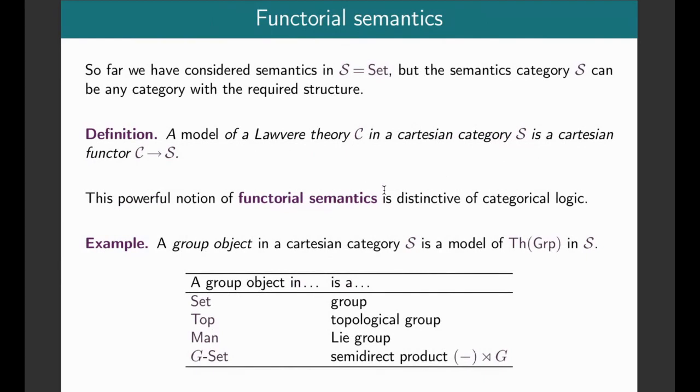Now we come to another powerful aspect of categorical logic, which is the idea of functorial semantics. So far we've been considering semantics in the category of sets and functions, which is the default setup, but the semantics category can be replaced with any category that has the needed structure. In the case of Lawvere theories, a model in a Cartesian category S is just a Cartesian functor from C to S.